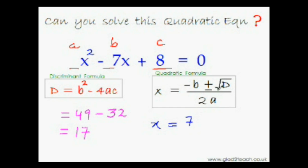Plus minus root D. So D is equal to 17. Divided by 2a, that is just 2, as a is here equal to 1, and 2 times 1 is 2 only. That's it.